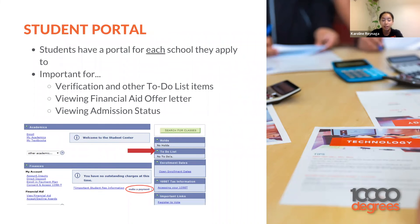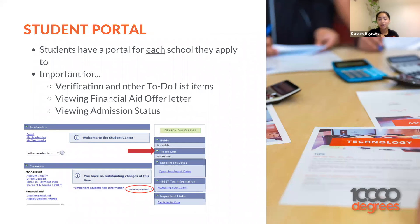Students have a portal for each school they apply to — important for verification, to-do list items, viewing financial aid offer letters, and viewing admission status. For example, if you applied to Santa Rosa Junior College, Sonoma State, UC Davis, and UC Merced, you would have to go into each website and create a portal for each one, because each school might require different things. Constantly log in to see what they're requiring.